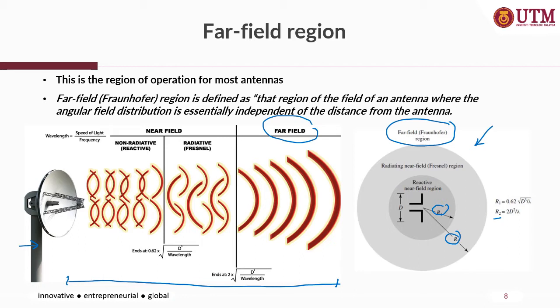In measuring the antenna in the far-field region, we must ensure that r, the distance from the antenna, is always larger than D — D being the overall linear dimension of the antenna — and r must also be larger than λ. So in the far-field region, r must be larger than 2D² over λ, where D is the linear dimension of the antenna and λ equals c over f, where f is the resonant or intended frequency of the antenna.